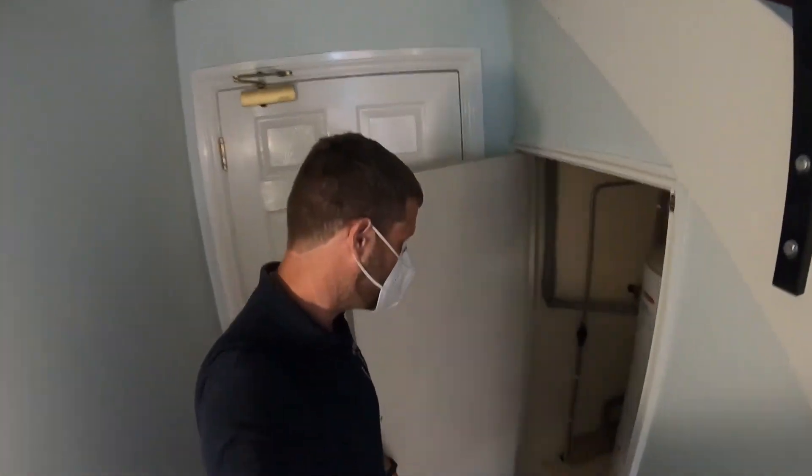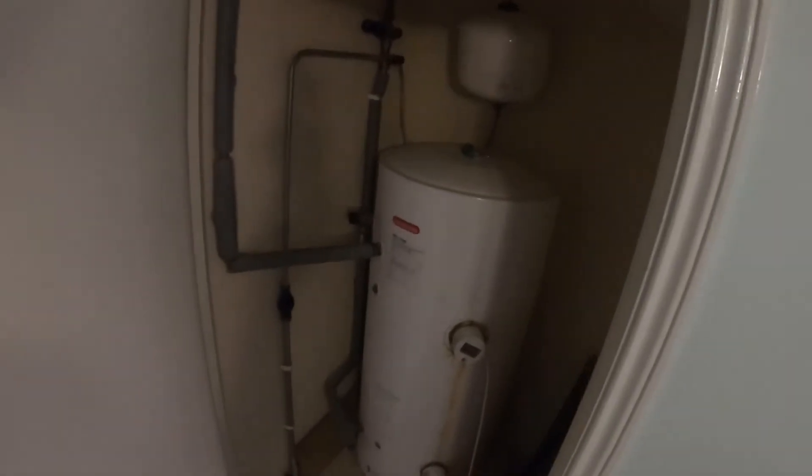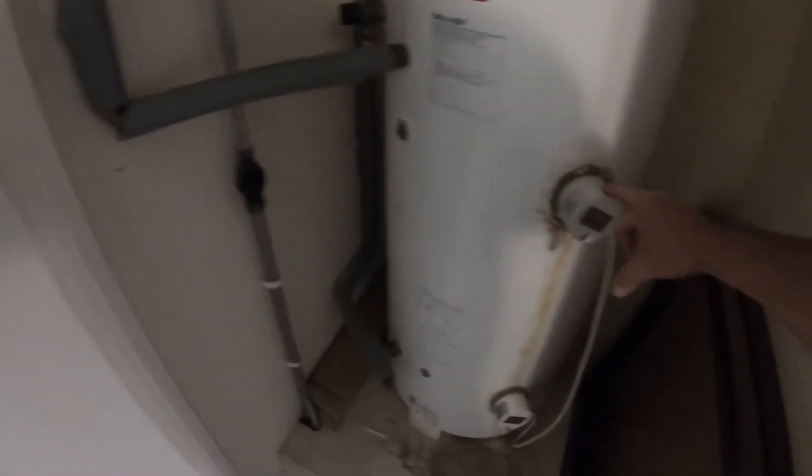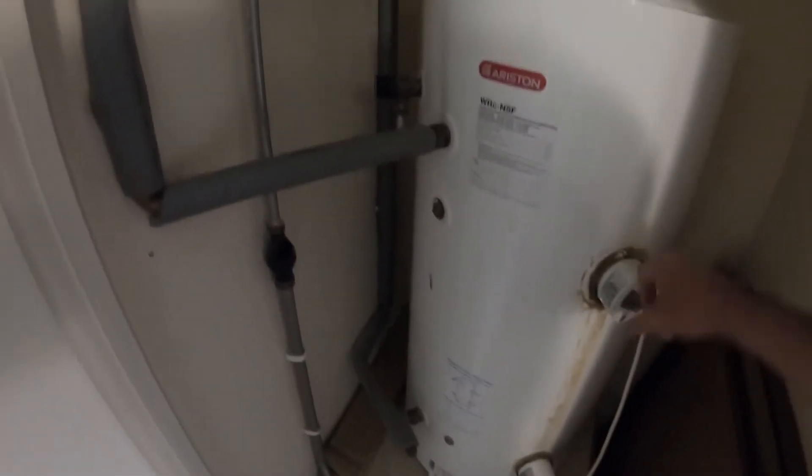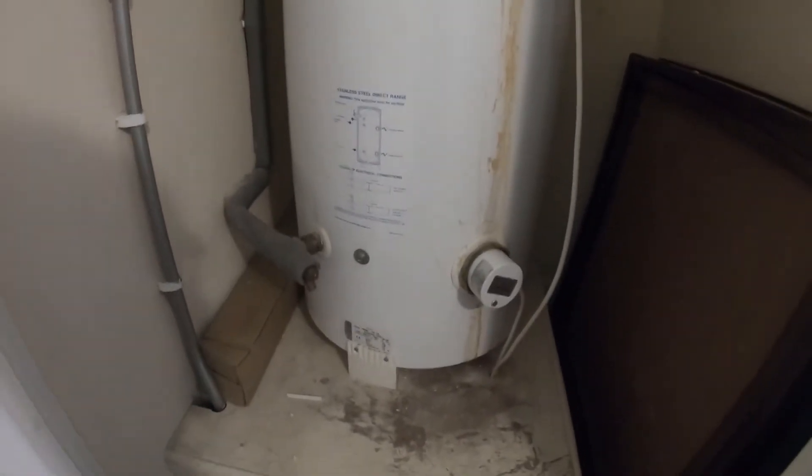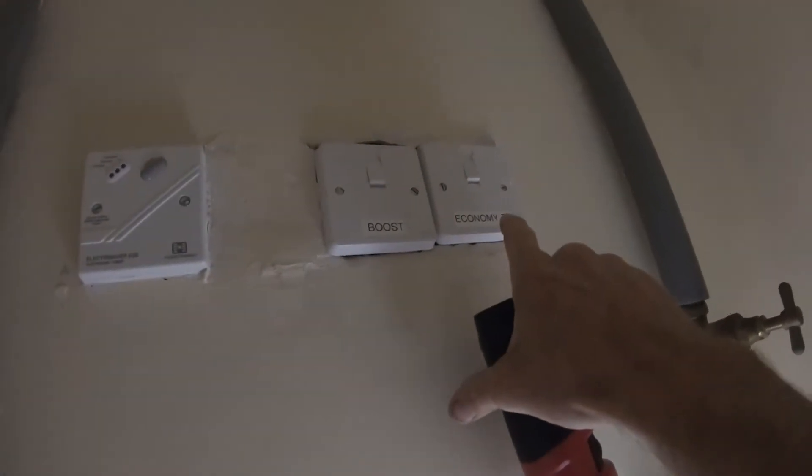Okay, today's job is this: we've got a problem on this hot water system, no hot water basically. This is an economy 7 setup, so we've got the top immersion heater which is your boost if you just want to quickly heat half the tank up, and this is the bottom one that works off the economy 7, comes on during the night. That's the one that isn't working. Switch the switch off there.